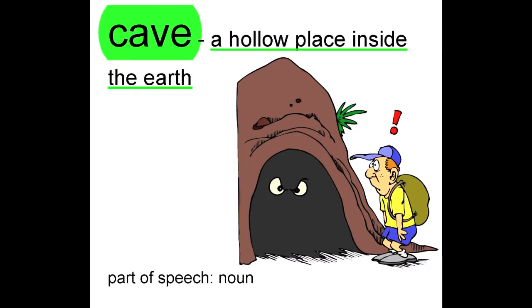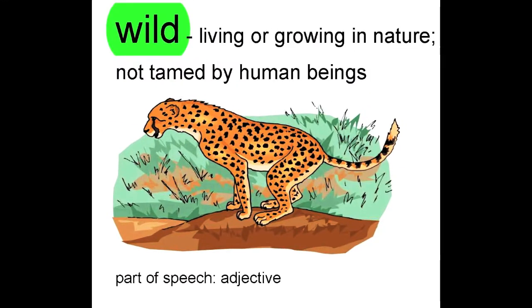Cave: a hollow place inside the earth. Part of speech is noun since cave is a person, place, or thing. Wild: living or growing in nature, not tamed by human beings. Part of speech is adjective since wild is a describing word.